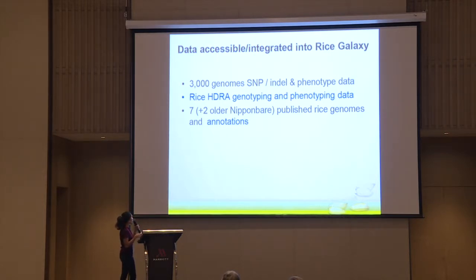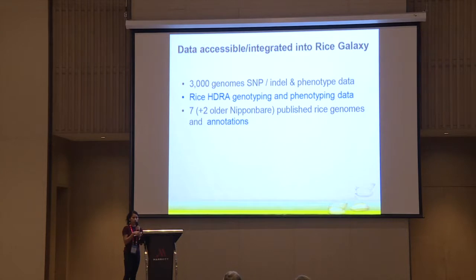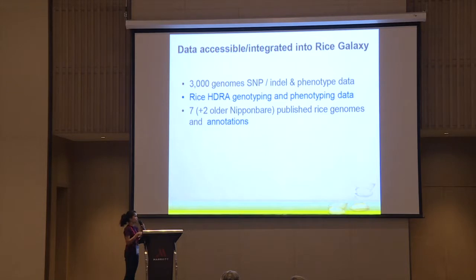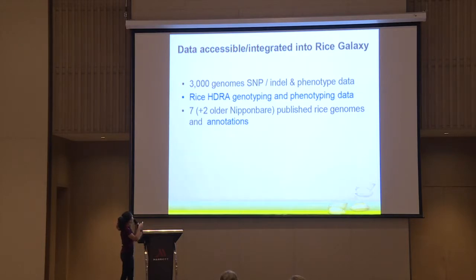We also have HYDRA — the High-Density Rice Array. We have this chip from Illumina, a 700K SNP chip. Most people use it for genome-wide association studies. We have the genotype in Galaxy and then you bring in your phenotypes and do the association analysis. We also have the other published rice genomes and annotations.